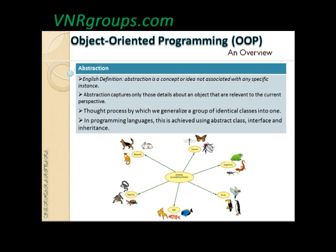Next comes abstraction, which is a very confusing topic and different authors define it in different ways. The best English definition is: abstraction is a concept or idea not associated with a specific instance. If you understand that basic English meaning, then you will understand what abstraction is.